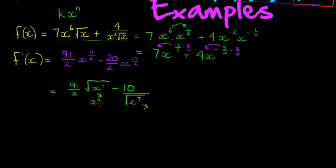x to the power of 10 times x to the power of 1. And this one will become x to the power of 6 times x to the power of 1. Now, we can take the square root of x to the power of 10. That would be 91 over 2. The square root of x to the power of 10, we just divide the exponent. So that becomes x to the power of 5 times the square root of x minus 10 over, and the square root of this one, that would be x to the power of 3 times the square root of x to the power of 1.